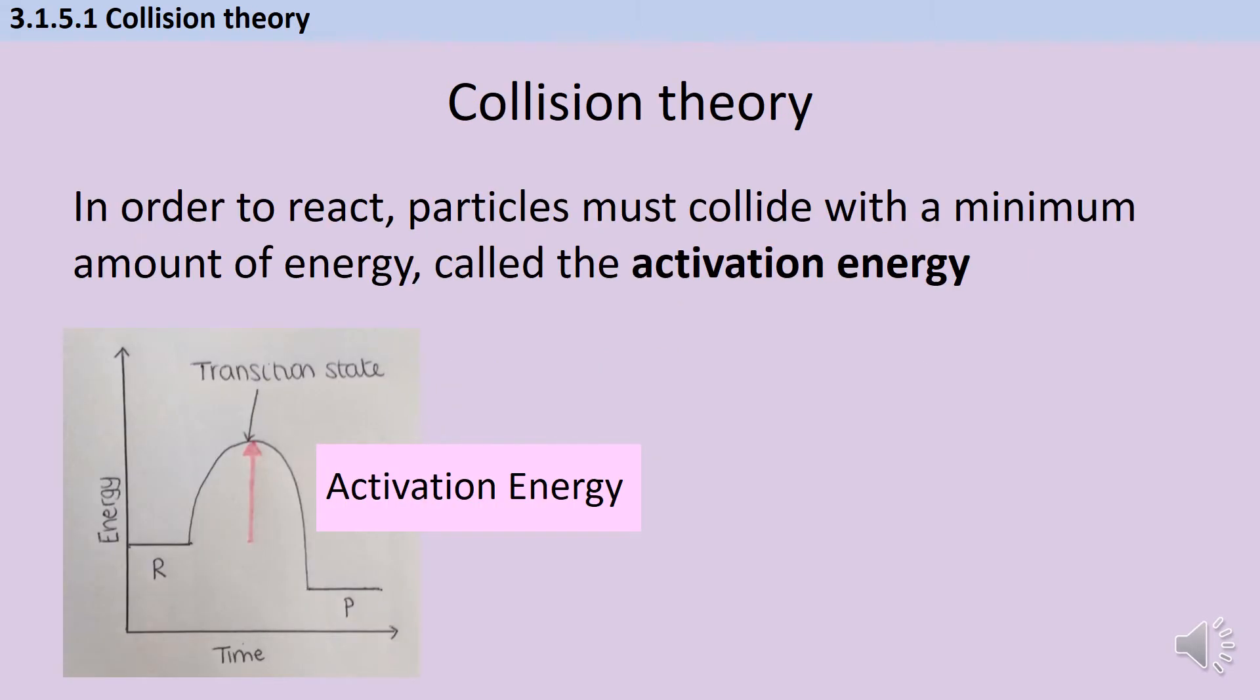In order to explain changes in reaction rate we use something called collision theory which you would have met at GCSE. And what collision theory tells us is that in order to react particles need to collide and they need to have a minimum amount of energy. So the activation energy is the minimum amount of energy required for a successful collision. That's a collision that is going to lead to a reaction taking place.